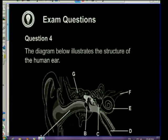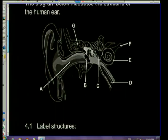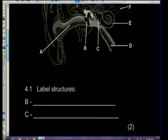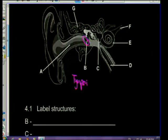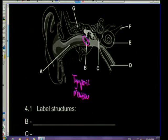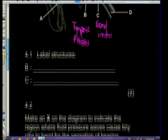Question 4 has a straightforward diagram of the ear. Question 4.1: label structures B and C. Number B is the tympanic membrane - try to use that term rather than eardrum. Number C is the round window, where excess sound waves filter through. The oval window is where the stirrup attaches; those are the two windows to know.